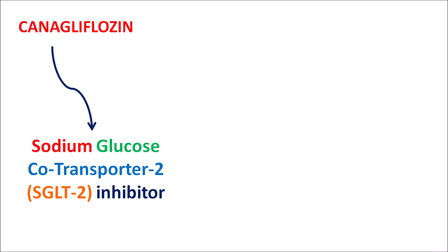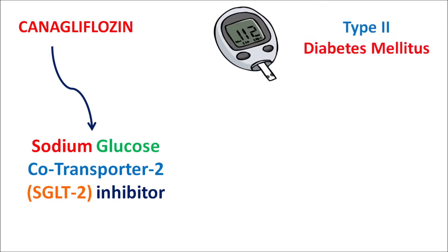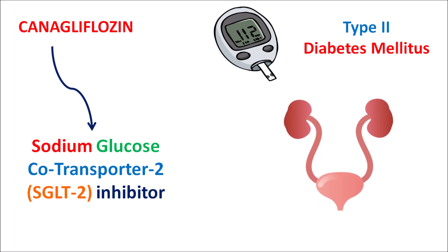Since this drug inhibits the reabsorption of glucose, it can be used in the treatment of type 2 diabetes mellitus. Along with diet and exercise, better glycemic control can be maintained by canagliflozin. This drug is not acting on the beta cells of pancreas; instead, it acts on the renal system by increasing glucose excretion through the renal tubules, thereby reducing glucose levels within the serum. That's why this drug can be combined with other anti-diabetic agents such as metformin for better glycemic control.